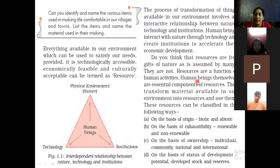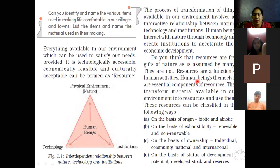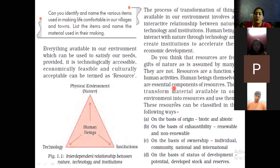Here we have three components: first is physical environment, second is technology, and third is institutions. In the diagram, human being is placed at the center. Human beings can use these resources with the help of technology, and for that they make institutions — like industries — and use machinery. Using technology, they make natural resources usable for themselves. Many people think natural resources are a gift of God, and they are, but these gifts become usable only when we can use them with the help of technology.